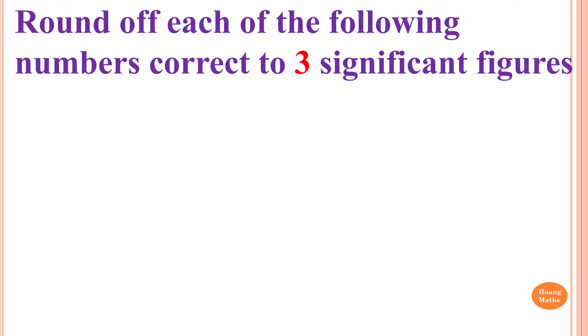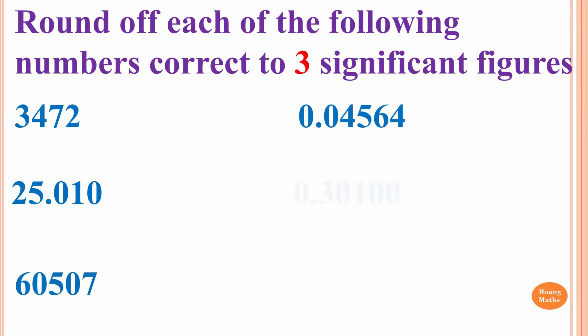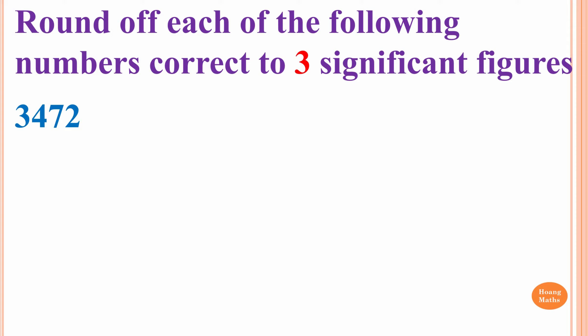Now exactly the same questions, but this time we round off to 3 significant figures. First one: we count 1, 2, 3 — we only want 3 significant figures. The number after 7 is 2, which is less than 5, so we round down. The answer is 3,470.